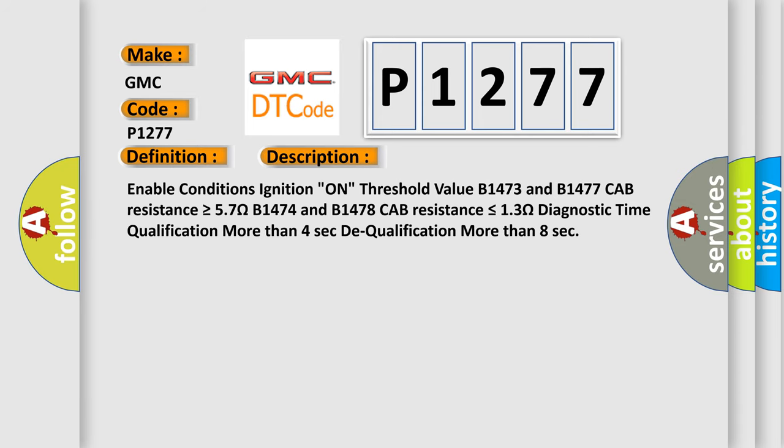Enable conditions: Ignition On. Threshold value: B1473 and B1477 Cab Resistance is greater than or equal to 57 ohms. B1474 and B1478 Cab Resistance is less than or equal to 13 ohms. Diagnostic time: Qualification more than 4 seconds, Dequalification more than 8 seconds.